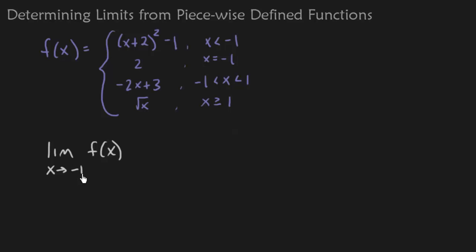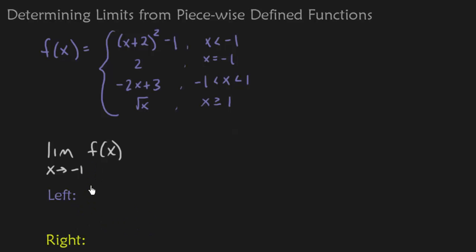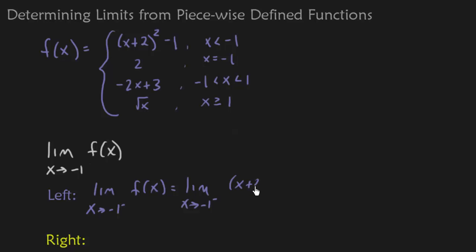Now I want to find the limit as x approaches -1 without a directional sign, which means I'm coming from both the left and right. So I need to do two separate limits — one from the left and one from the right. Starting with the left-hand limit as x approaches -1 from the left: I just did this problem. We already found that the function piece is (x+2)² and the limit is 0.